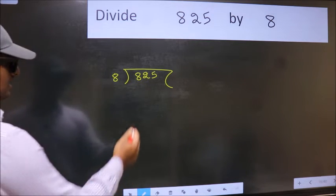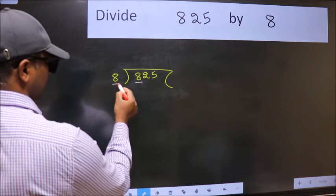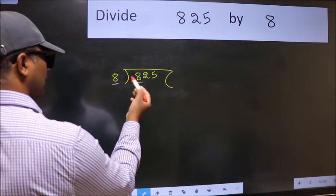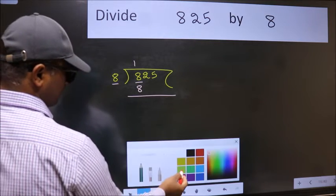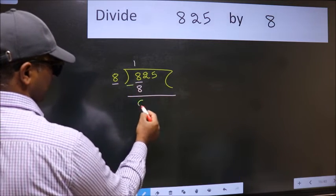Next, here we have 8 and here 8. When do we get 8 in the 8 table? 8 once is 8. Now we should subtract. We get 0.